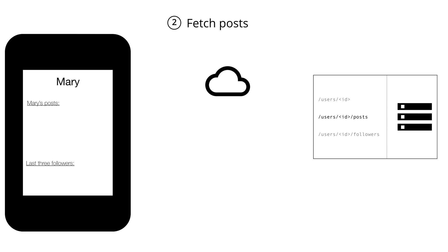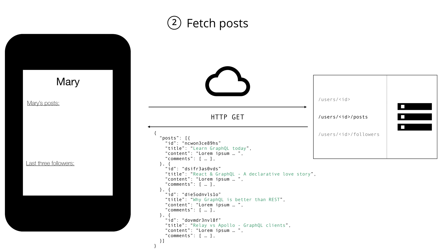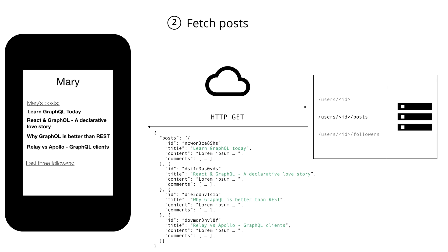The next step is to download all the posts of the user, using the /users/ID/posts endpoint with the user's ID. The server returns all the information about the posts of that user stored in the database. Notice again that we're downloading a lot of additional information that's not really relevant to the app, since we really only want to display the title of each post. But at least we've got access to the post titles and can render them inside our application.